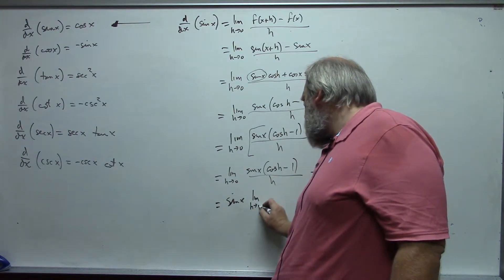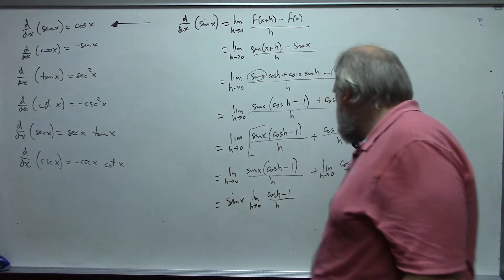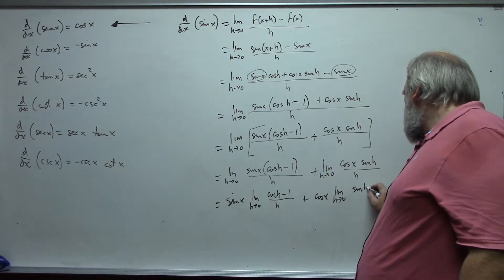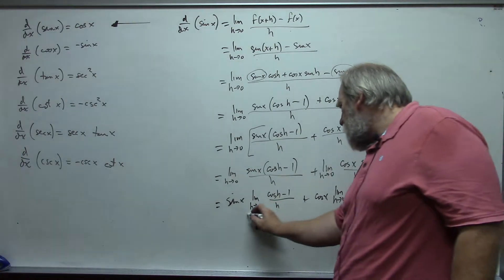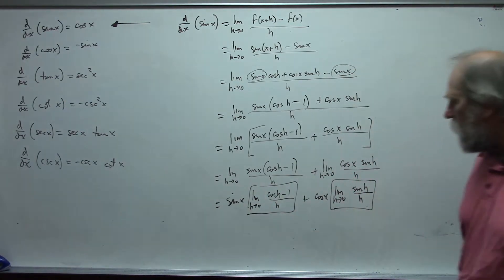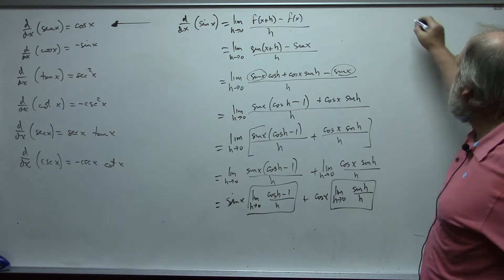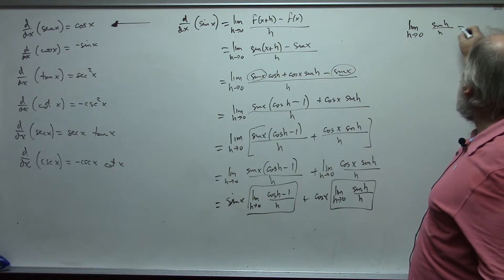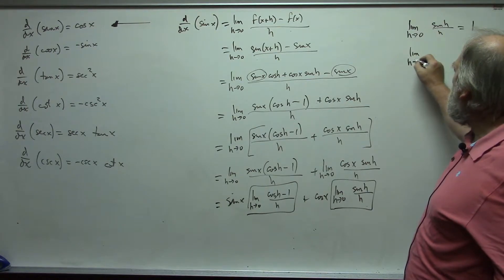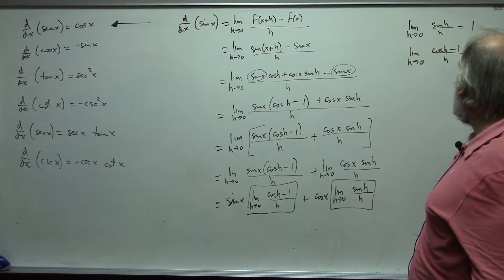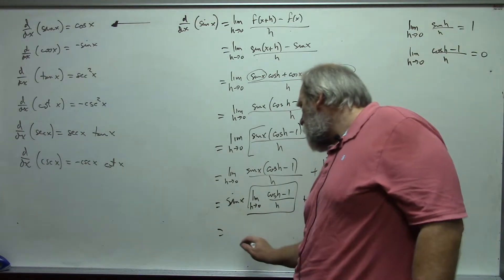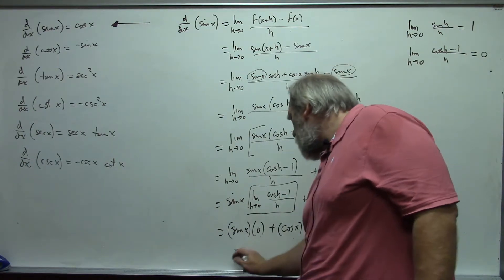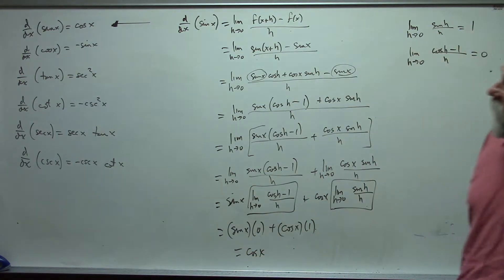This gives sine(x) times the limit as h approaches 0 of (cosine(h) minus 1) over h, plus cosine(x) times the limit as h approaches 0 of sine(h) over h. These are indeterminate limits but they have nice values. The limit of sine(h) over h as h approaches 0 is 1, and the limit of (cosine(h) minus 1) over h as h approaches 0 is 0. So this becomes sine(x) times 0 plus cosine(x) times 1, and we get cosine of x.